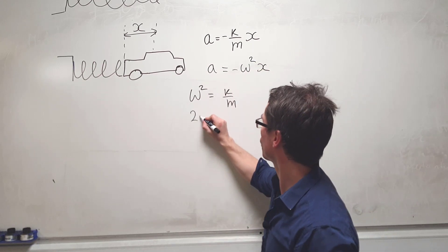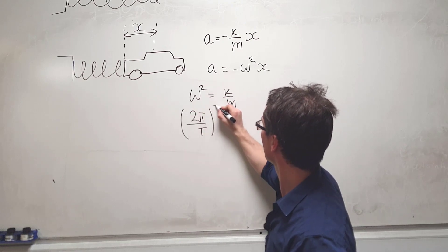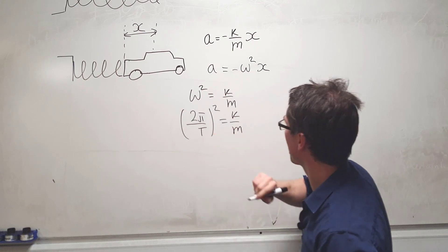So ω is just 2π/T, and this is squared, and this is equal to k/m.